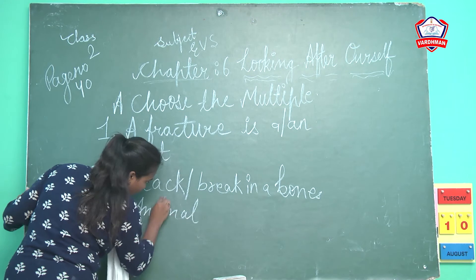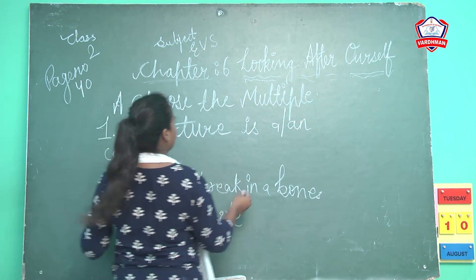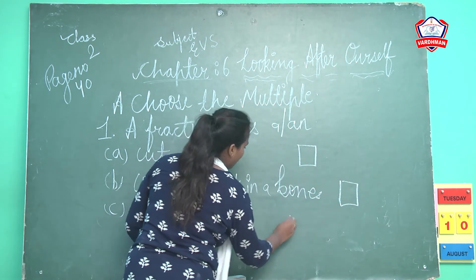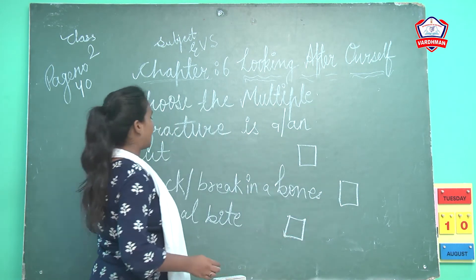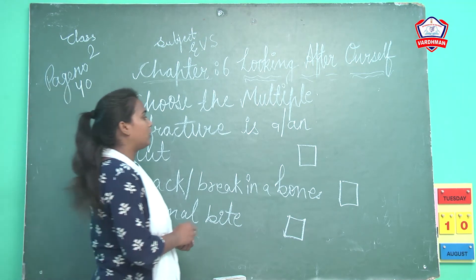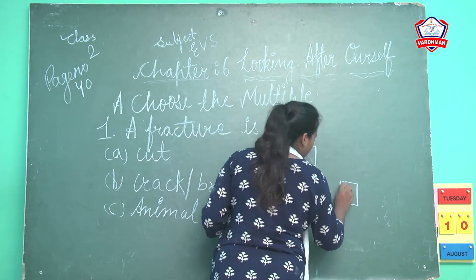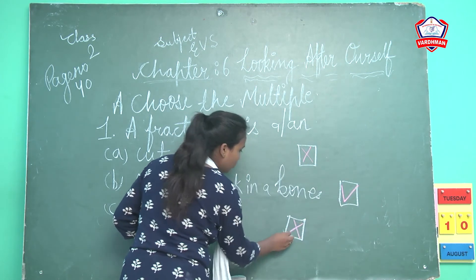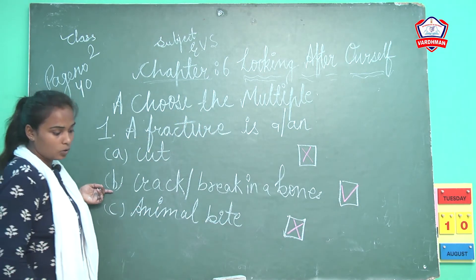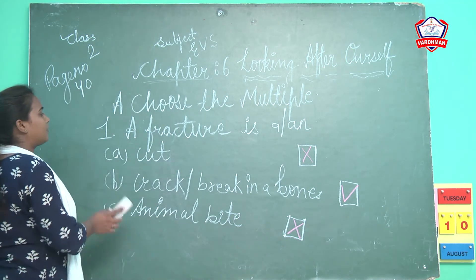I hope you know the answer. Which statement is true about a fracture? Is it a cut, a crack, any break in the bone, or an animal bite? Cut toh nahi hota — so crack/break in the bone is correct. The true statement is B. First mark it in your textbook with a pencil, then do it in your EPS notebook.